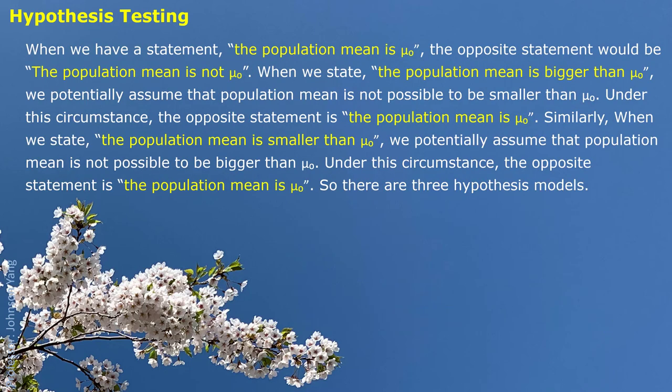When we have the statement that the population mean is mu0, the opposite statement would be that the population mean is not mu0. When we state the population mean is bigger than mu0, we potentially assume the population mean is not possible to be smaller than mu0. Under this circumstance, the opposite statement is that the population mean is less than or equal to mu0.